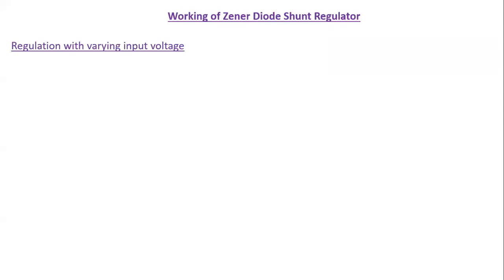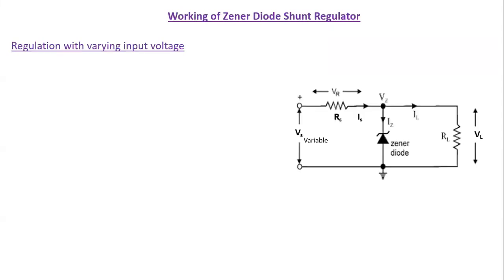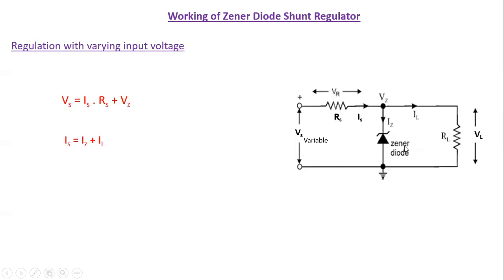This is the circuit diagram which explains the function. Here you can see this is our supply, which is a variable supply, and you have the Zener diode here connected across the supply as a shunt. This is the current limiting resistor RS that you learned in the previous session, and this limits the current flowing through the Zener diode so that it works in the properly functioning region. You also have the load, which is our electrical appliance, connected across it.